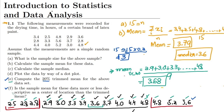In part f, we are asked whether the sample mean is more or less descriptive as a center of location than the trimmed mean. We can see that both the mean without trimming and the mean with 20% trimming are almost similar. Therefore, these two values are not more or less descriptive than each other — they essentially possess the same level of descriptive information.